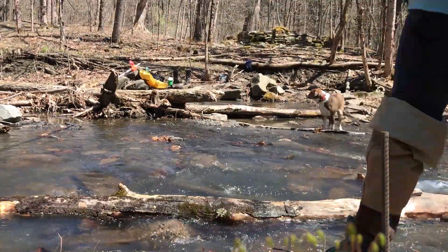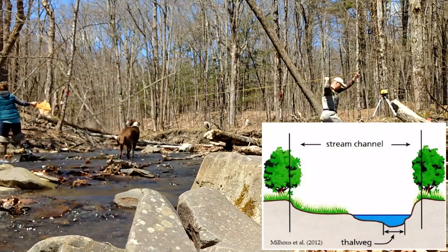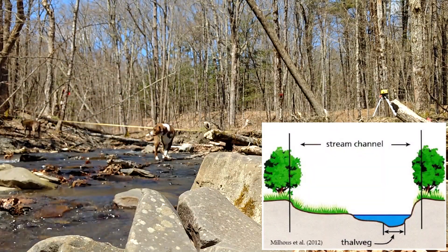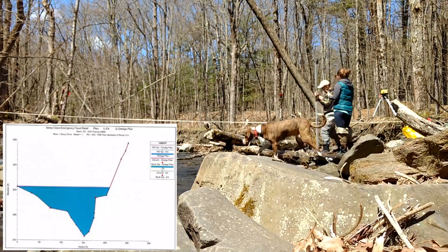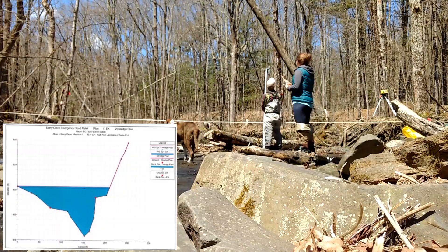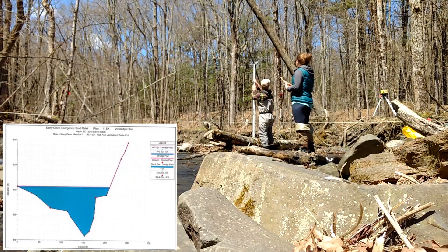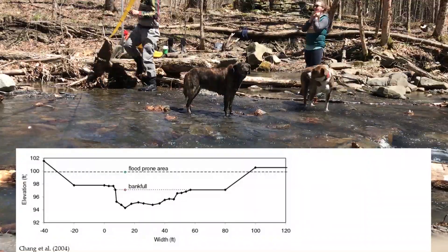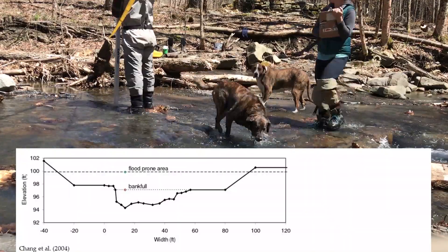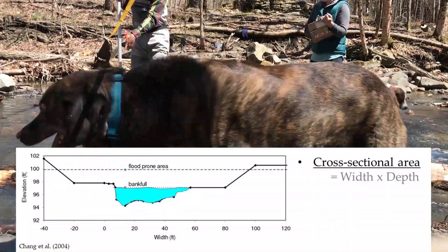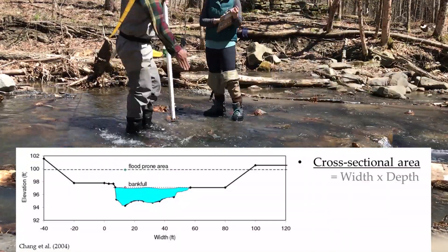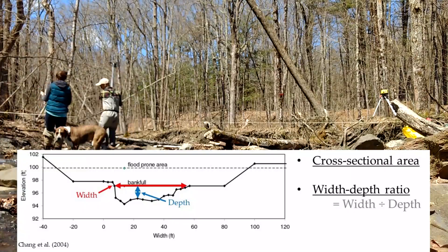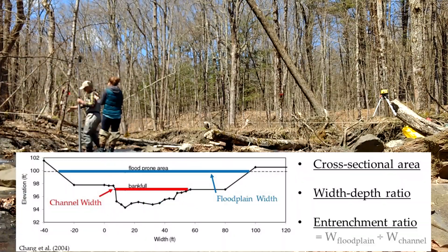A stream's dimension is the cross section of its channel — what it looks like if you slice through the river like a loaf of bread. To determine a stream's dimension, we take a cross section and use the stream's width and depth to calculate three important dimensions: the cross-sectional area, the width-to-depth ratio of the channel, and the entrenchment ratio.